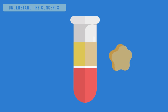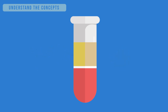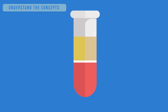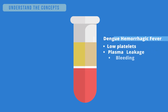Once the platelet count drops below a critical value, the plasma starts to leak from blood vessels into the abdomen and chest. In later stages, the patient starts to bleed into the skin and mucosal membranes. Dengue hemorrhagic fever is characterized by the triad of low platelets, plasma leakage, and bleeding.